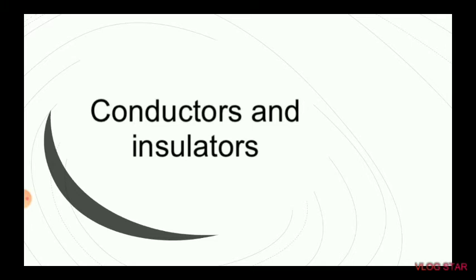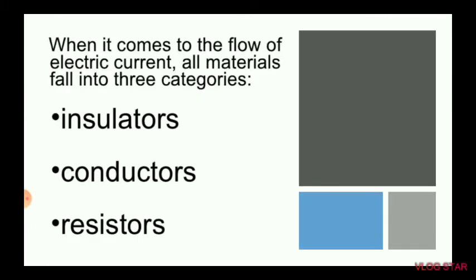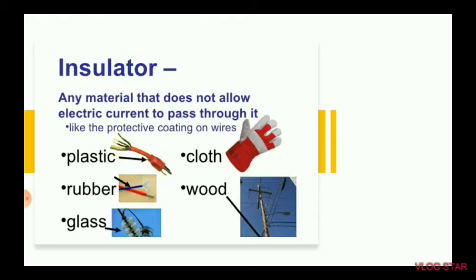When it comes to the flow of electric current, all materials fall into three categories: insulators, conductors, and resistors. An insulator is any material that does not allow electric current to pass through it, like the protective coating on wires.